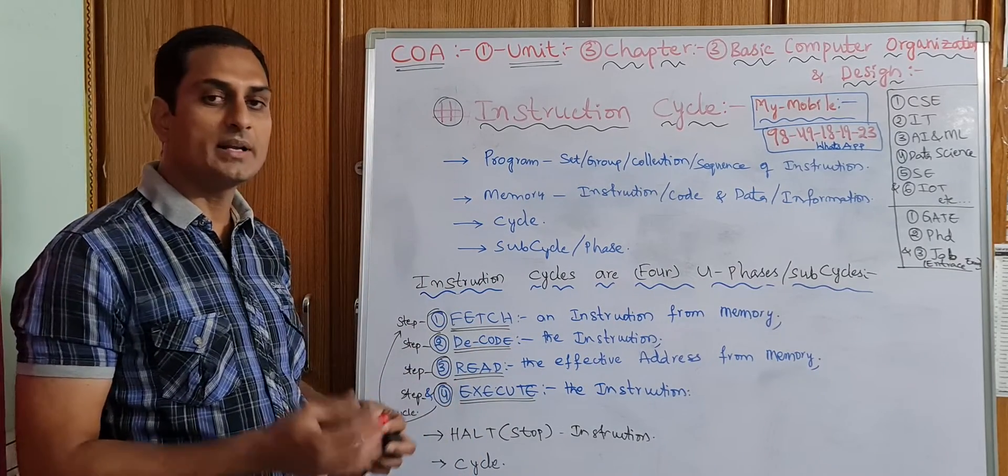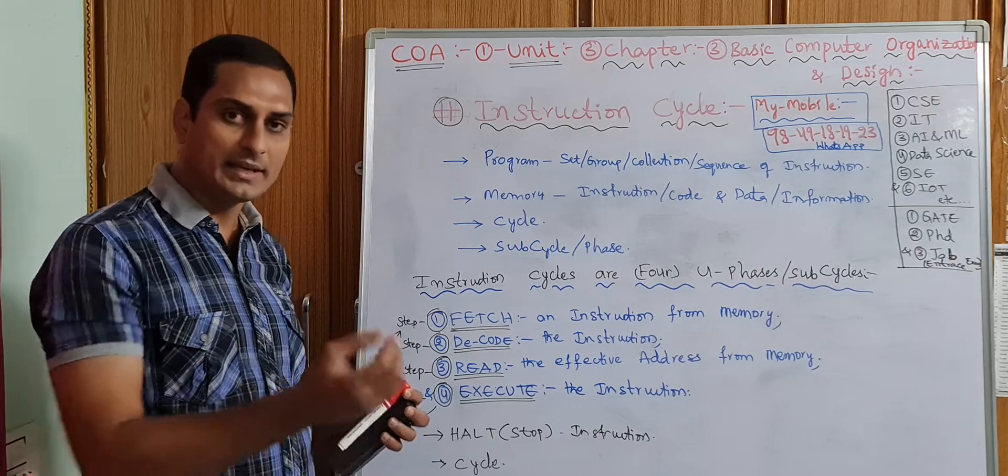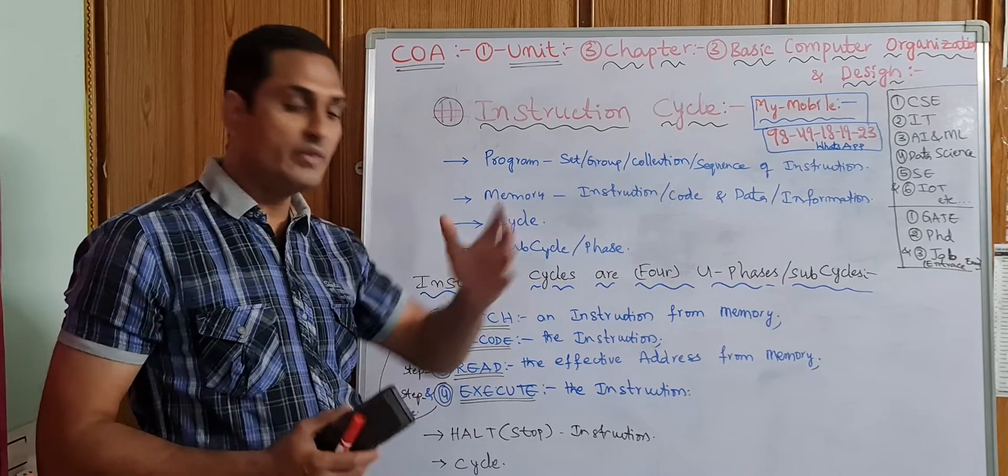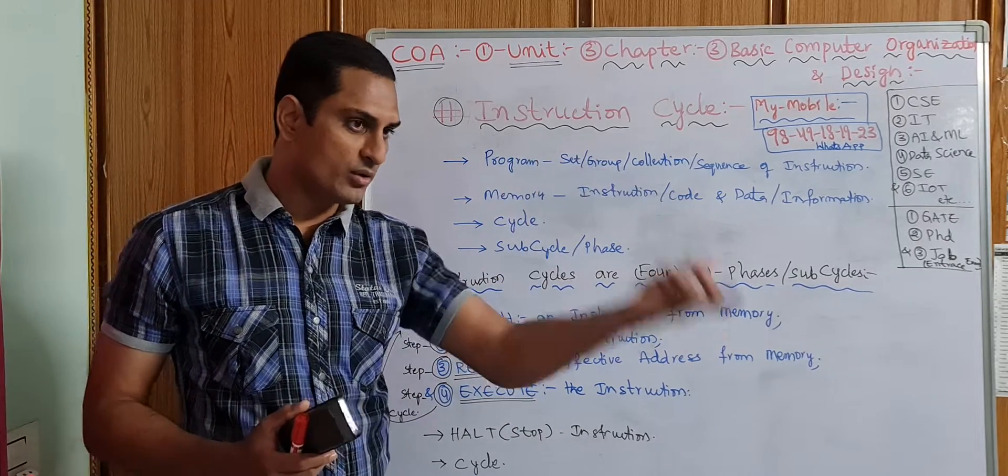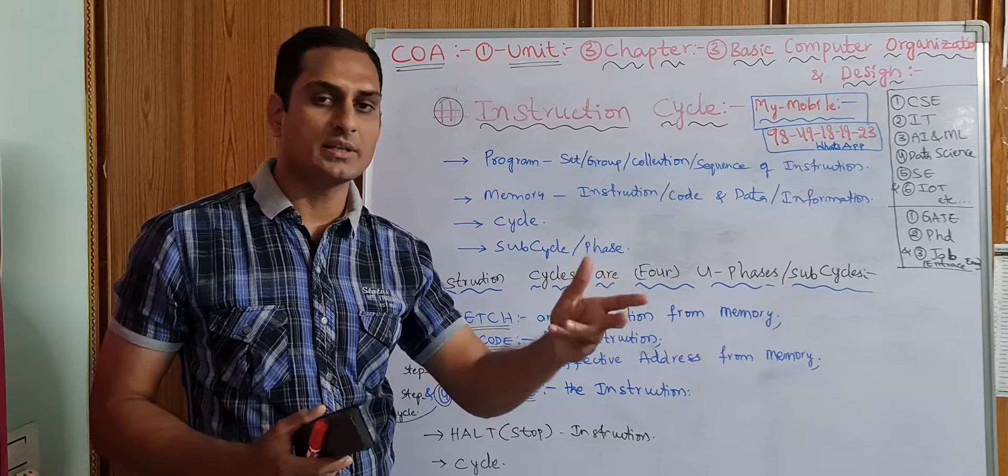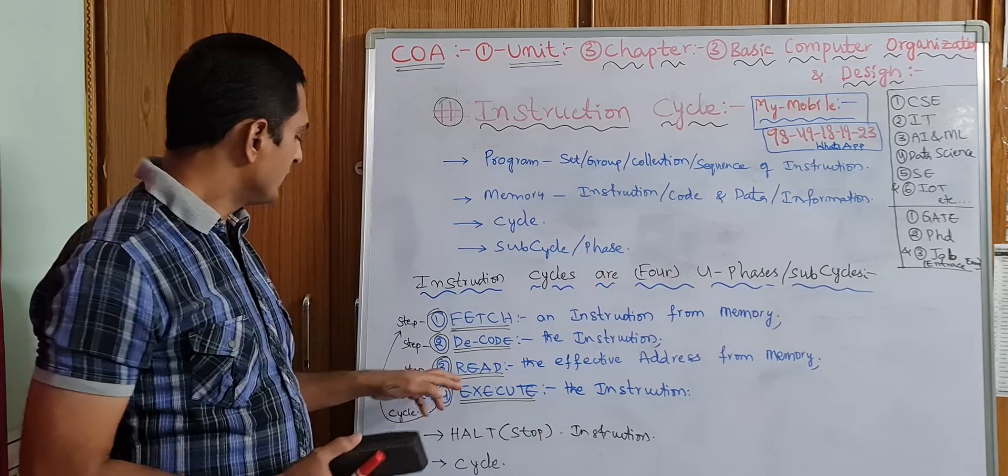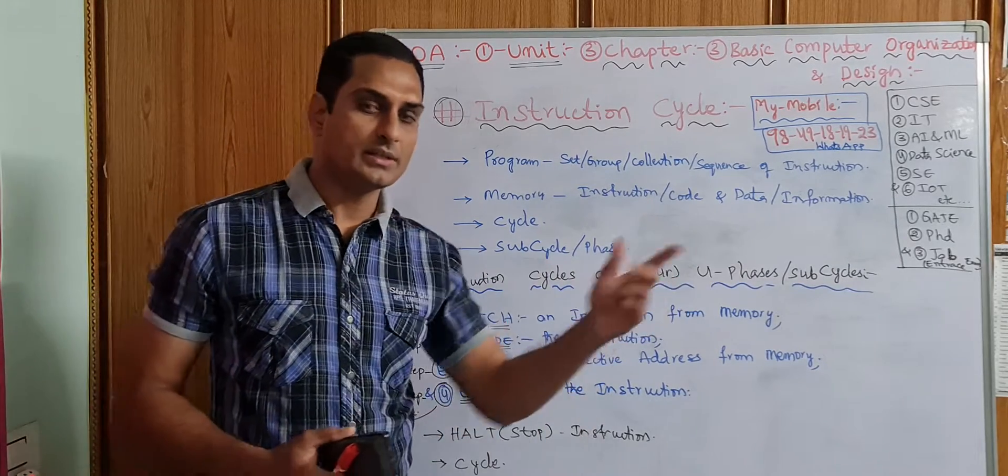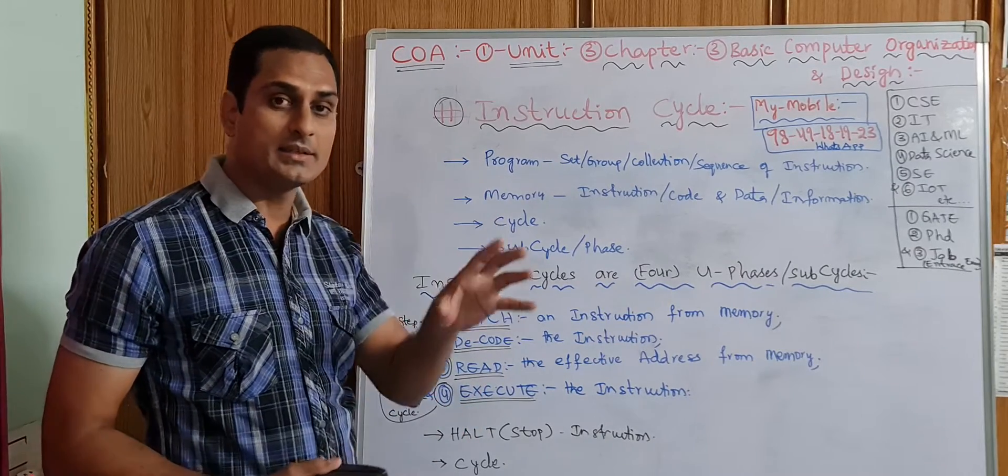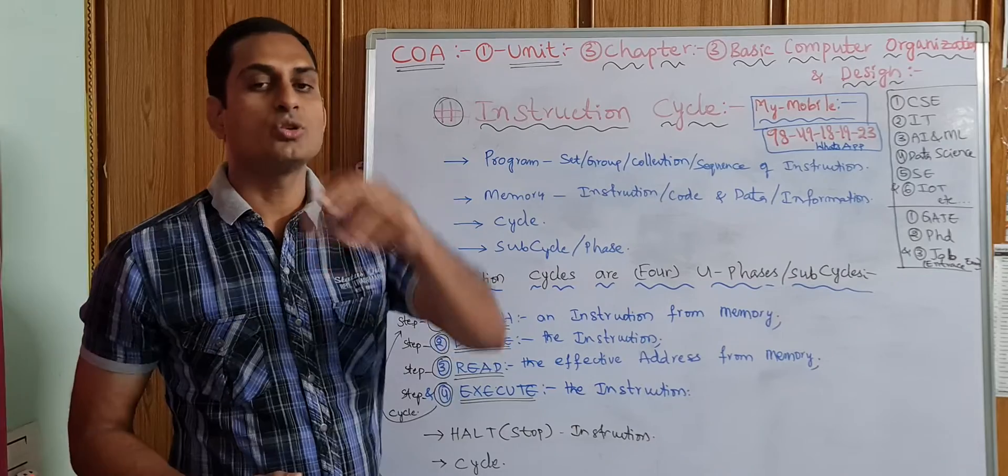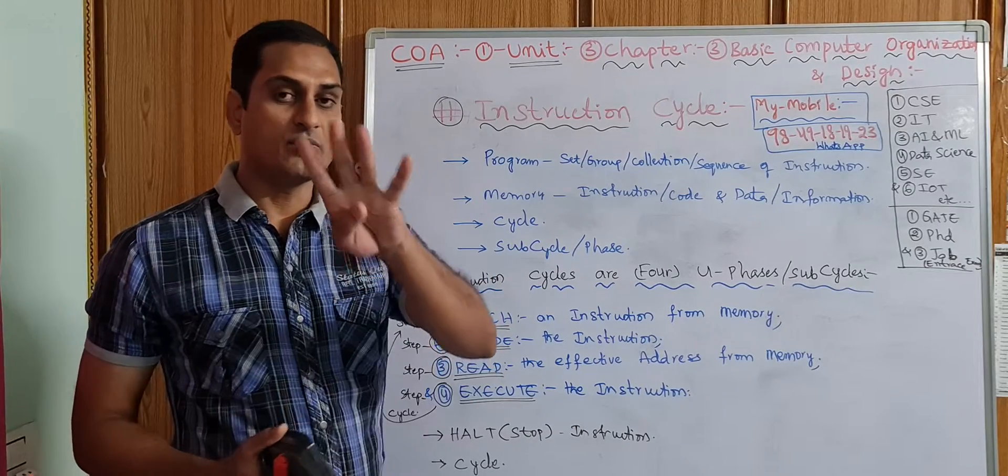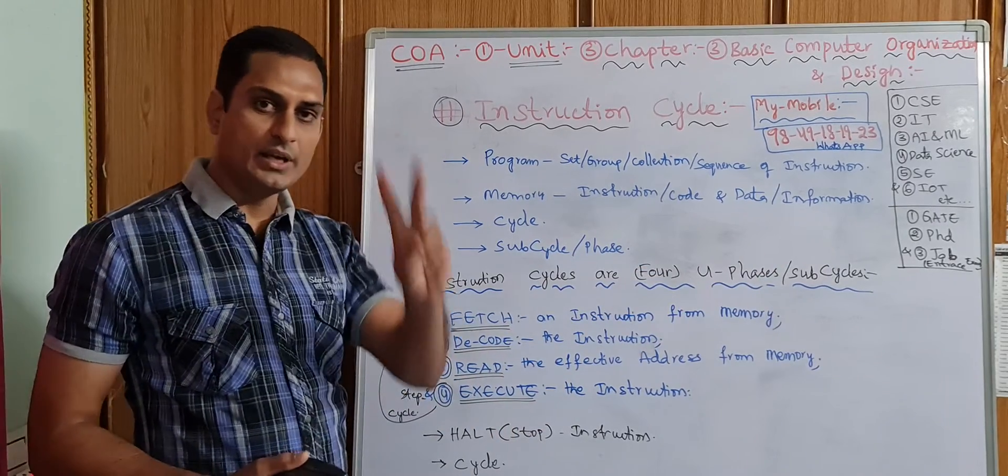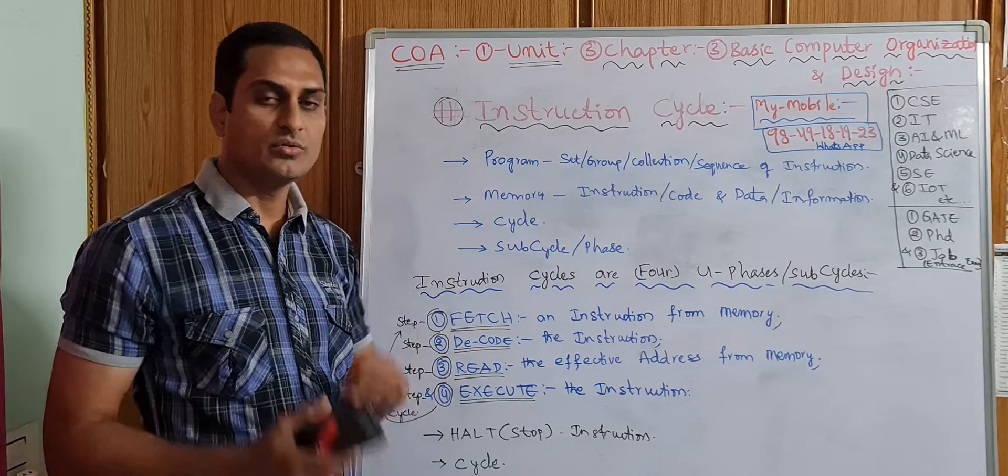First one is fetch. Fetch is nothing but access, gain, taking the instruction. Second one, decode. We need to decode the instruction. It will be in the encoding form. We need to decode it, change the instruction according to our format. Then we need to read, read the instruction. Then we need to execute. Again, we will go back to the first position until the complete work, the complete task should be fulfilled.